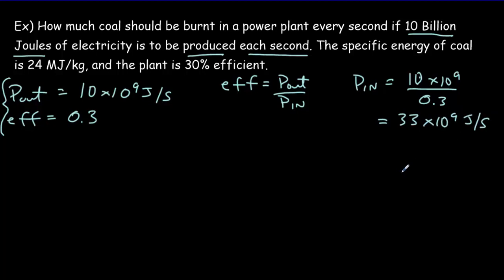My third number is this 24 mega times 10 to the sixth joules per kilogram. I usually use a symbol rho with an m to represent this specific energy, or the gravimetric energy density. I would use a rho with a v for the volumetric energy density, and of course it would have units of joules per meter cubed.